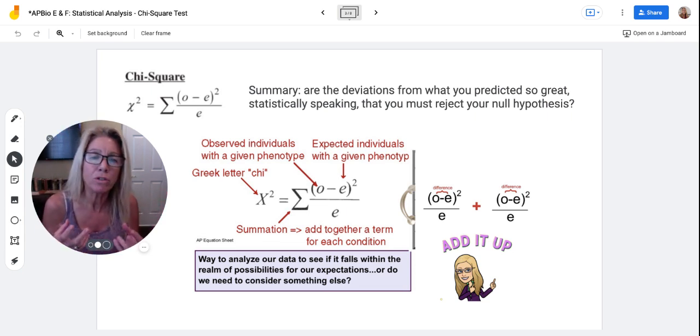If it's so large I'm going to have to reject what's called my null hypothesis, or if the number is small enough I can accept my null hypothesis.